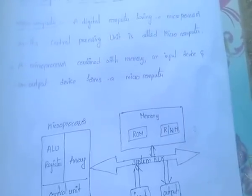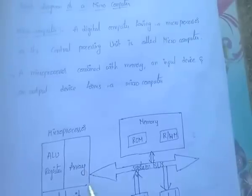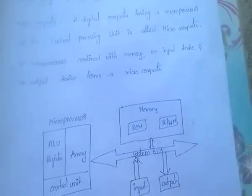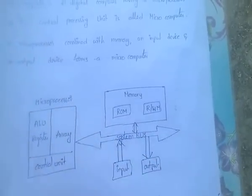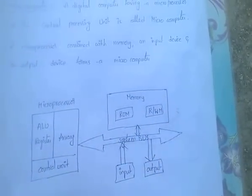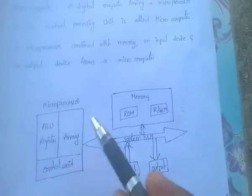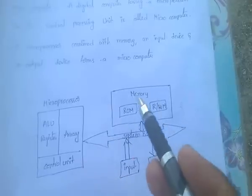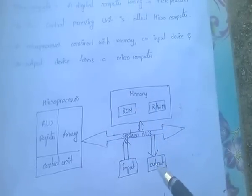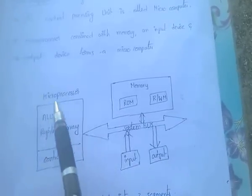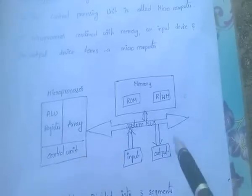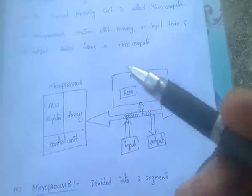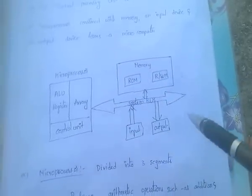A microcomputer is a digital computer having a microprocessor as its central processing unit. That means a microprocessor combined with memory and input-output devices forms a microcomputer, consisting of a microprocessor, memory, and input-output devices.